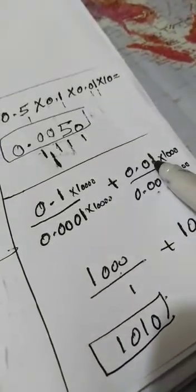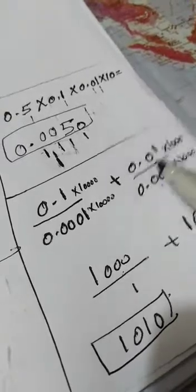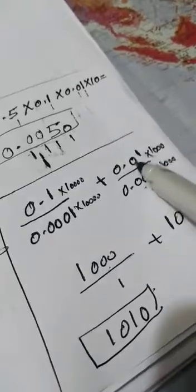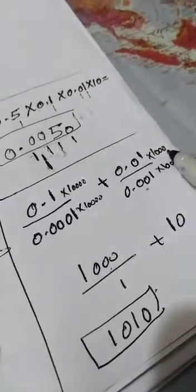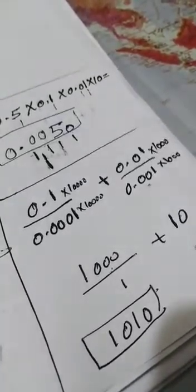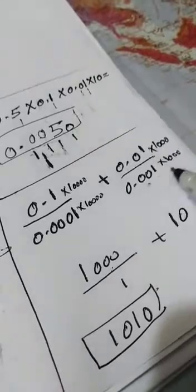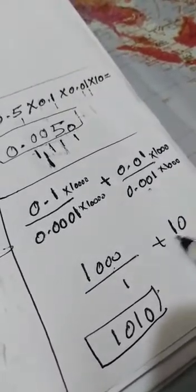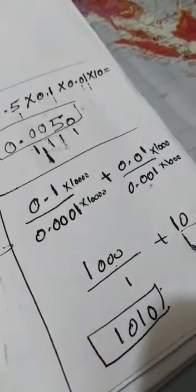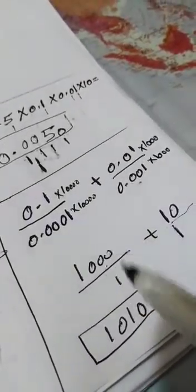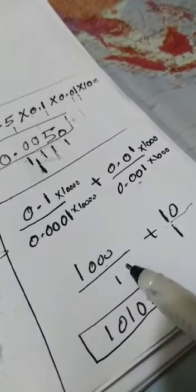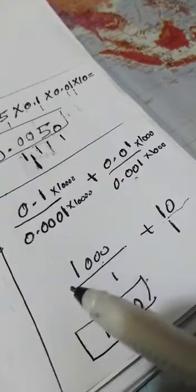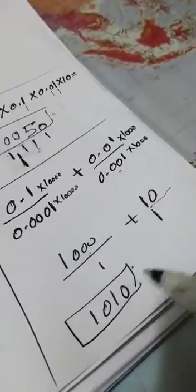0.01 multiplied by thousand is equal to 10. Cancel two zeros with two digits, so we have 10. Down, we have three digits with three zeros, so we have one. Finally, we have thousand over one, which equals thousand, plus ten over one, which equals ten. So the last answer is one thousand and ten.